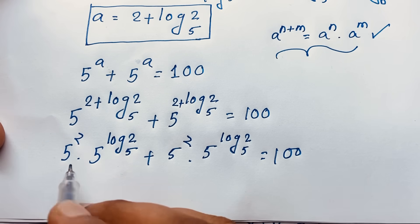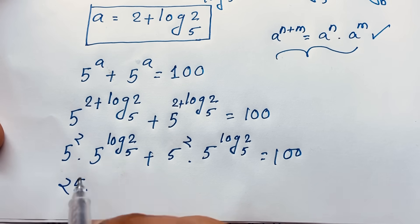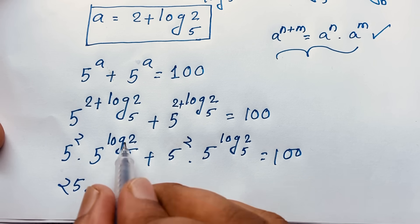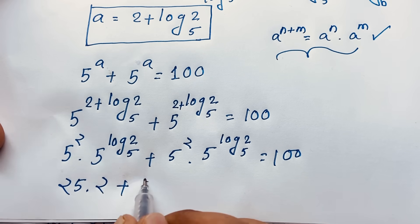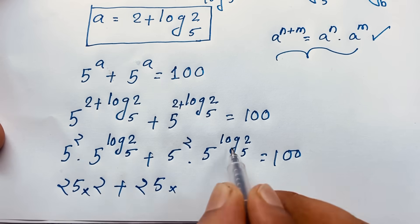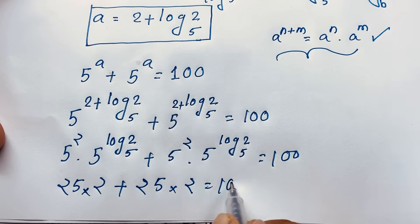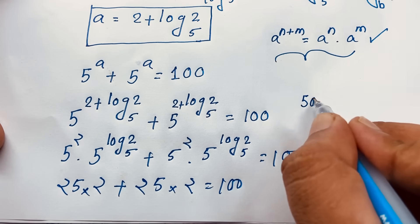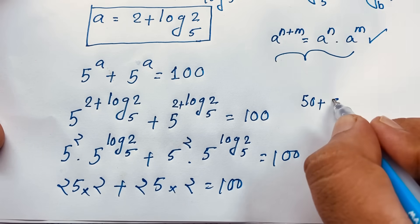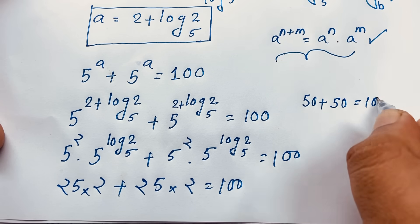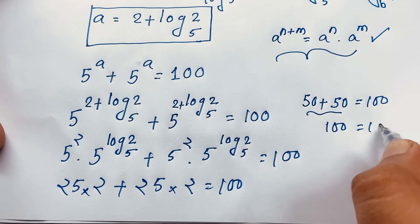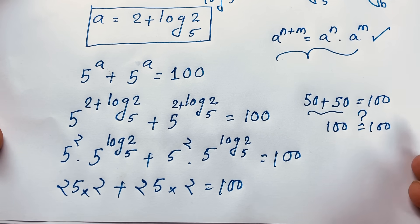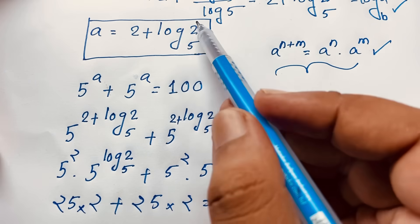Now at this point, 5 to the power 2 will be 25, and 5 to the power log 2 base 5 — the base and the log base are the same — so it will be 2. So it will be 25 times 2, plus 25 times 2, is equal to 100. 25 times 2 will be 50, plus 50, is equal to 100. Then 50 plus 50 is 100 equals 100. So you can see A is equal to 2 plus log 2 base 5. This is our final answer in this math problem.